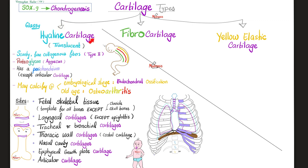Where can I find hyaline cartilages? In the fetal skeletal system at the endochondral ossification sites — which is basically most of your bones except the clavicle and skull bones. These undergo membranous ossification, not endochondral ossification.